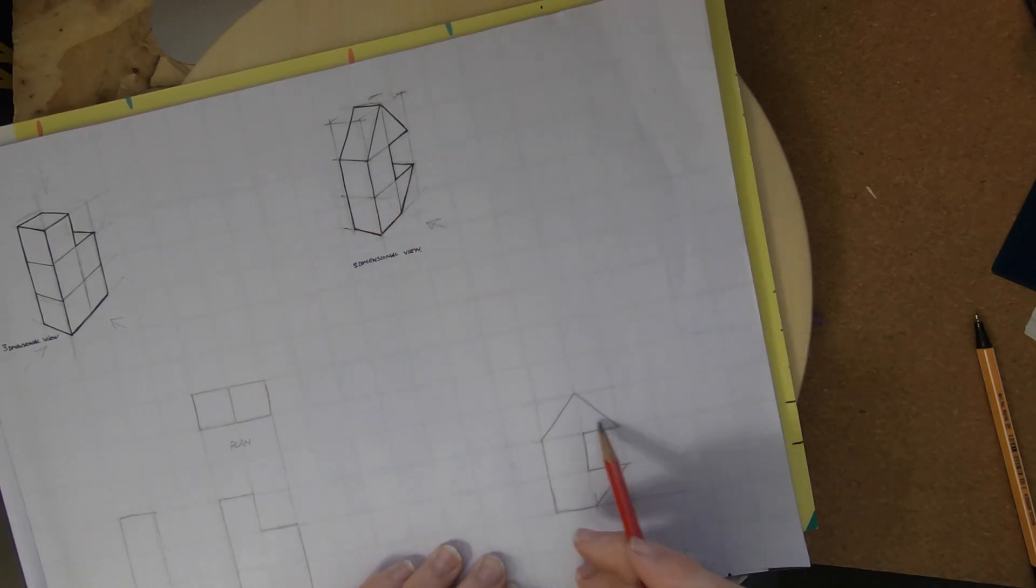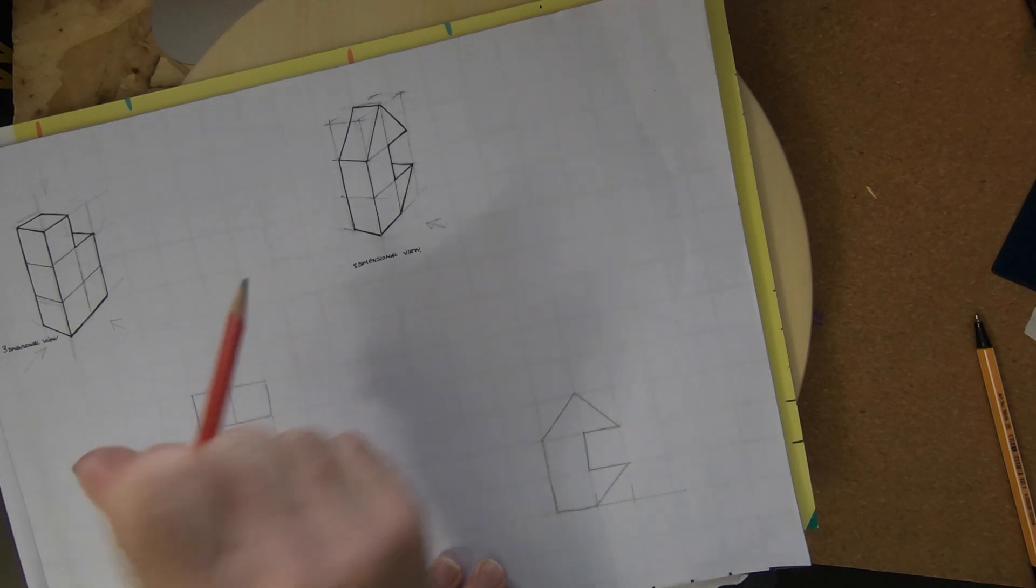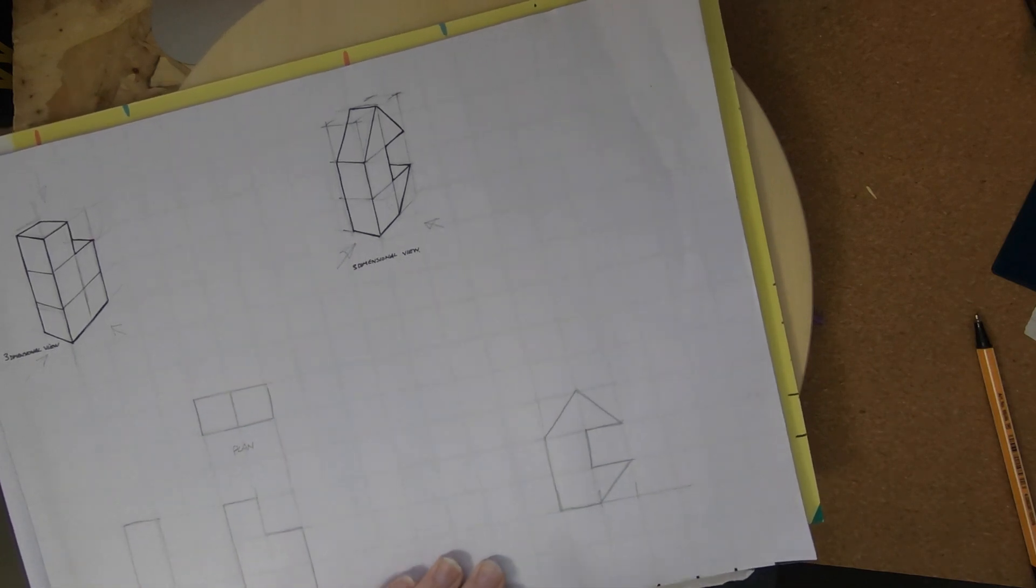Now we've got to think of the other views because the other views aren't quite so clear. This is the main elevation. It gives us most of the information. Just checking around about what we've got.